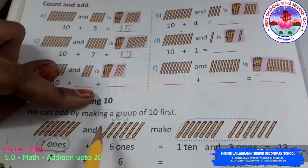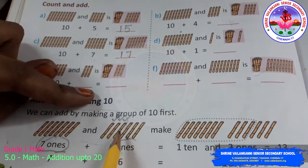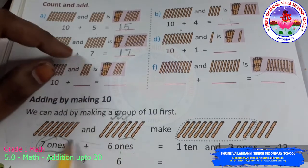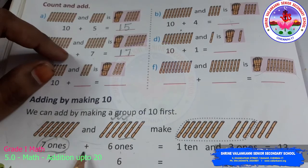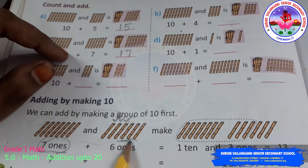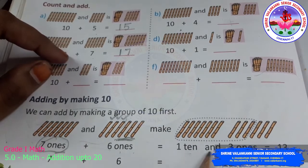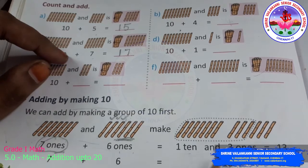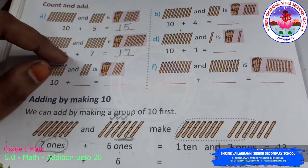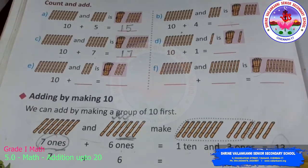So you will take only 3. 1, 2, 3. You take 3 sticks from here and give it to 7 ones to make it 1, 10. Then you keep the 3 ones there itself and then add 1, 10 and 3 ones. You get 13. You already know 1, 10 and 3 ones make 13. So, you get the answer.